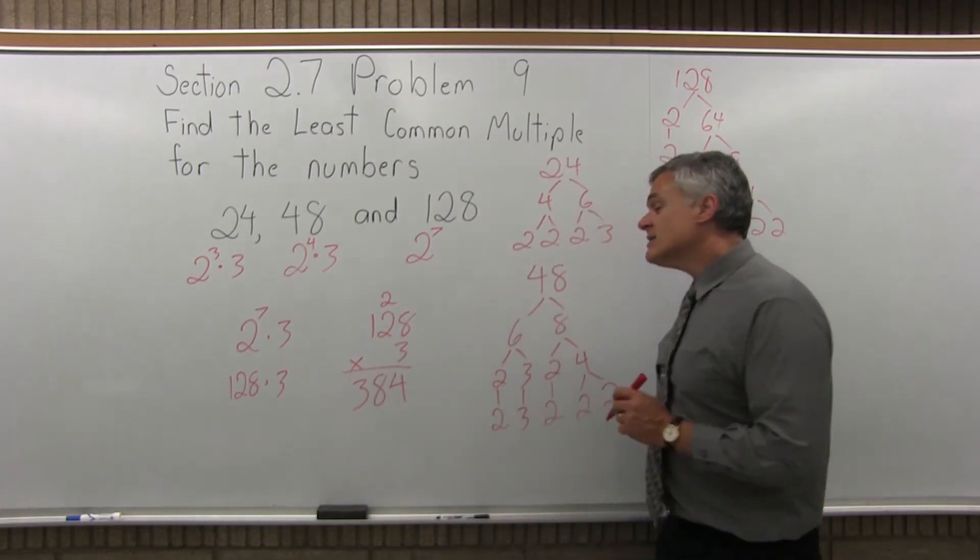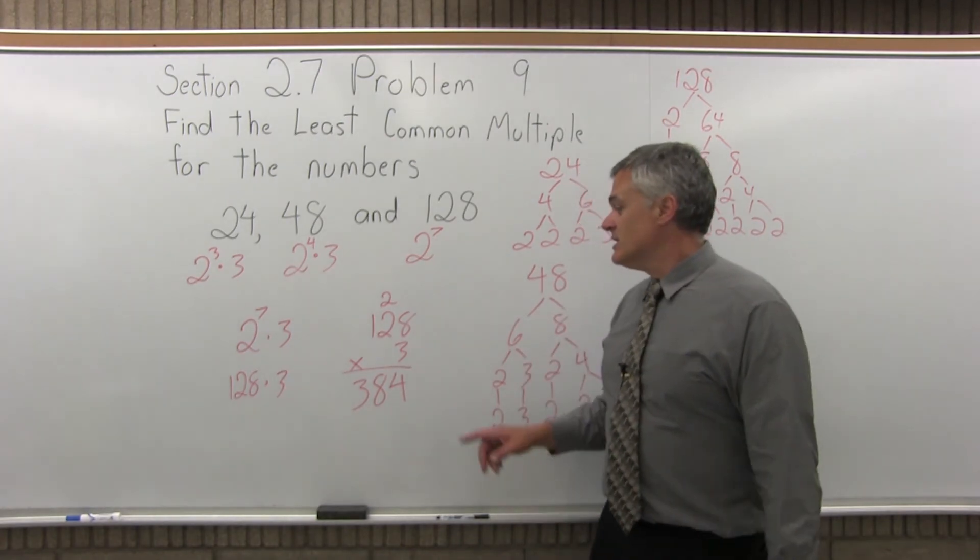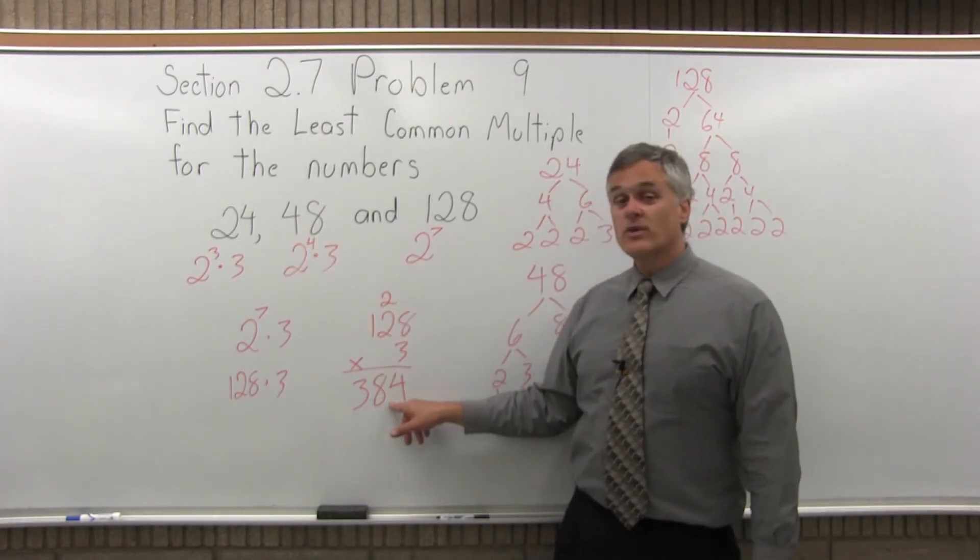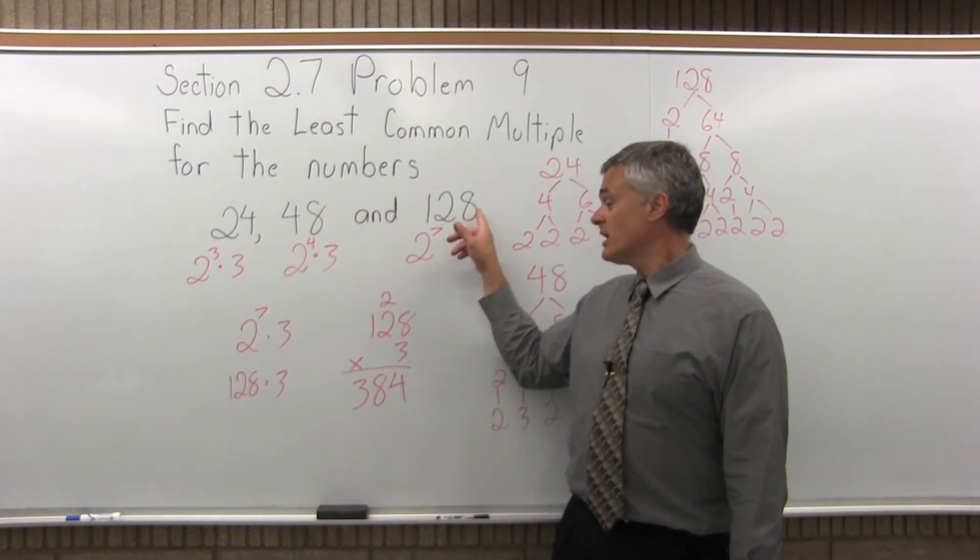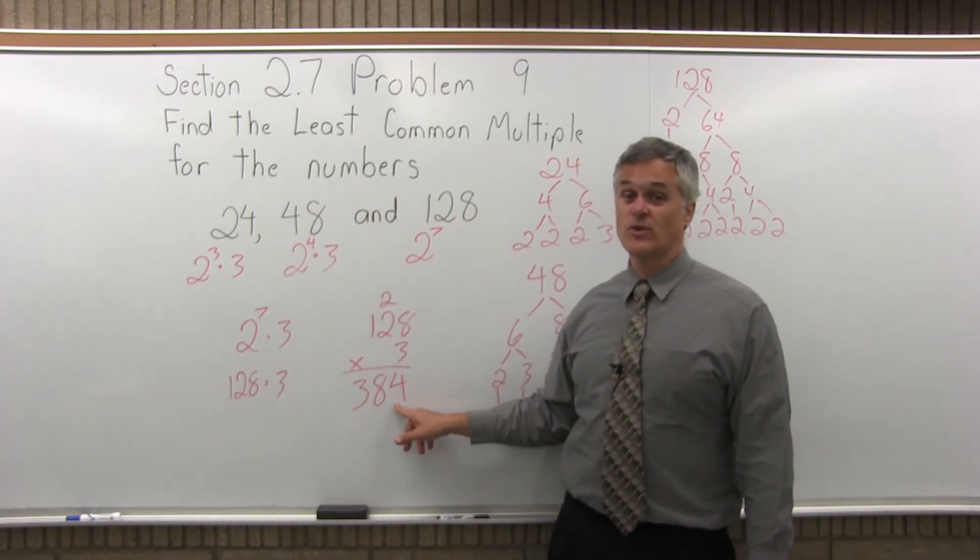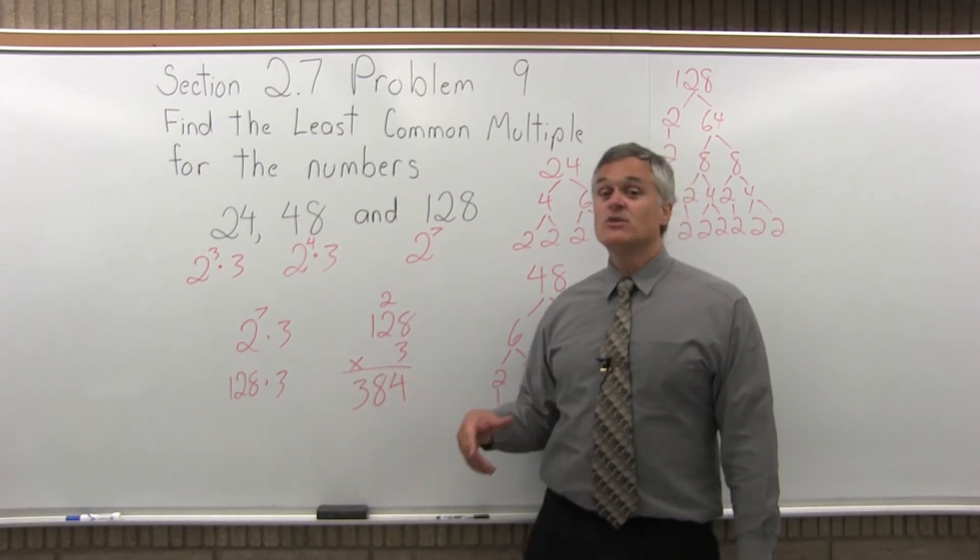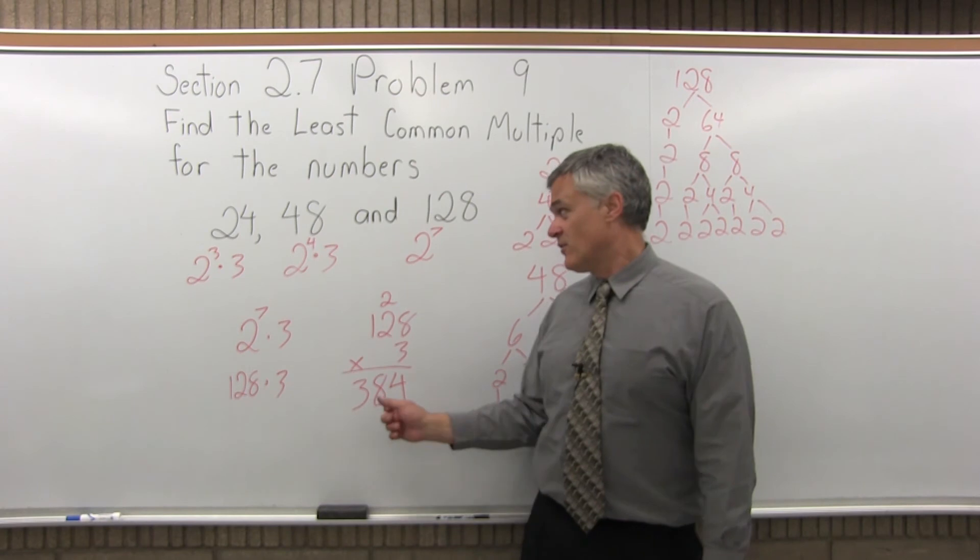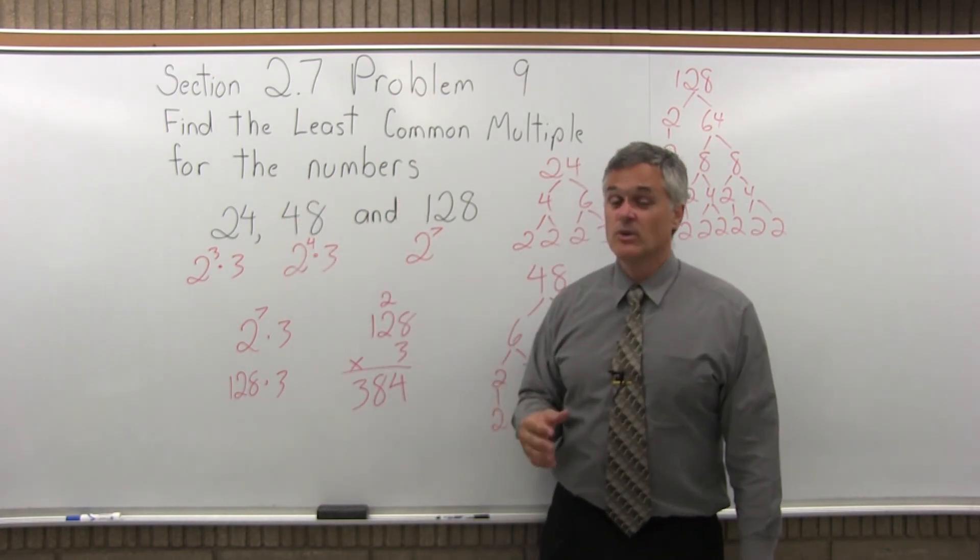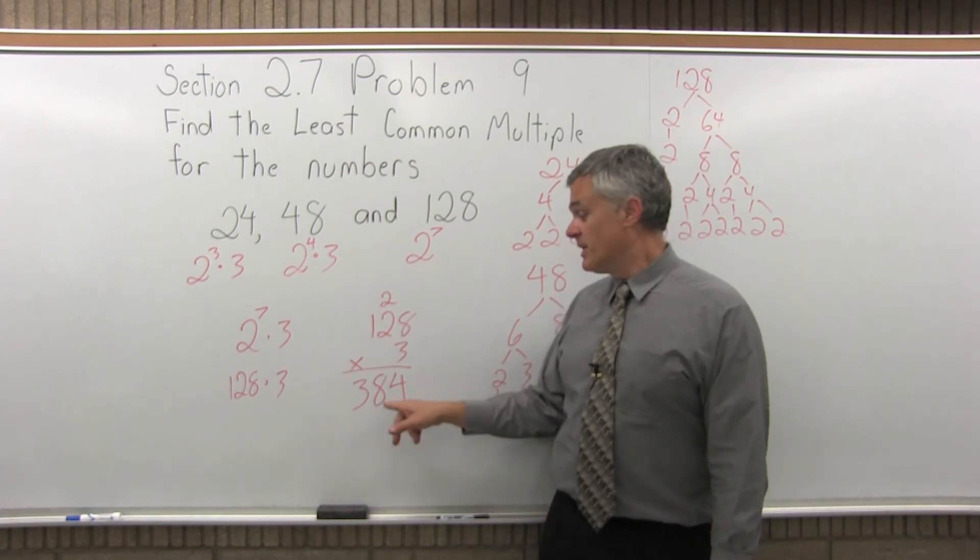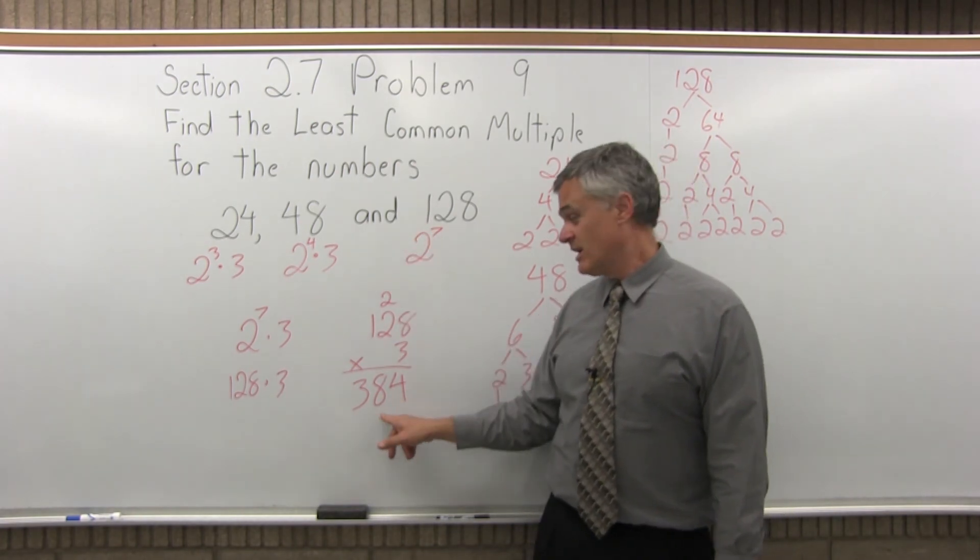My final answer comes out to 384. What that means is 24 will divide into 384 evenly, 48 will divide into 384 evenly, and 128 will also divide into 384 evenly. There are no other values smaller than 384 that all three of these numbers—24, 48, and 128—will divide into evenly. There are bigger numbers than 384 that they'll divide into evenly, but 384 is the smallest.